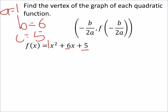In order to find the x value, I've got negative b, which is 6, over 2 times a, which is 1. So that's negative 6 over 2, which would be negative 3.